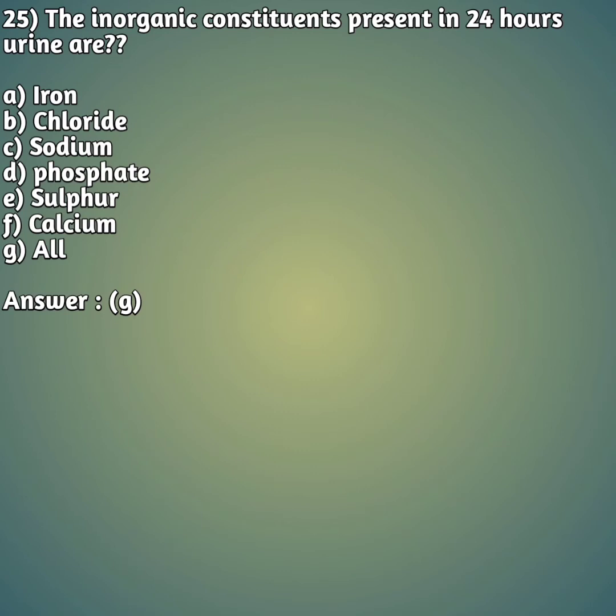Question 25: The inorganic constituents present in 24-hour urine — option A: iron, option B: chloride, option C: sodium, option D: phosphate, option E: sulfur, option F: calcium, option G: all. The right answer is option G, all — iron, chloride, sodium, potassium, sulfur, and calcium are all present in 24-hour urine.